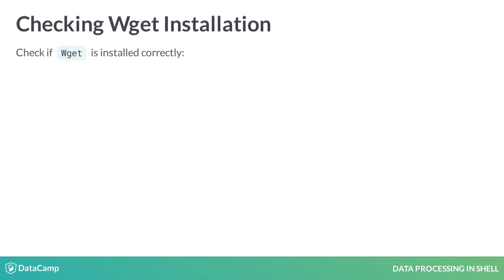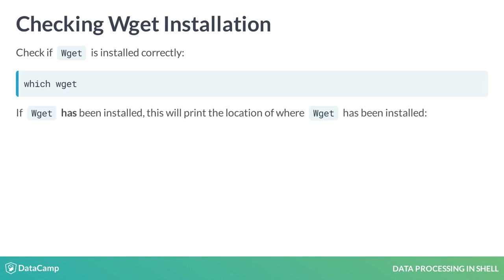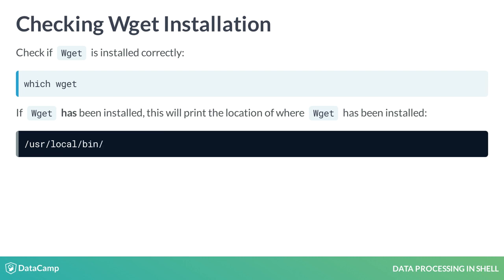Aside from using man, another way to check if wget has been installed correctly is by using which wget. This will return the location of where wget is installed — for example, in the local user bin. If wget has not been installed, there will simply be no output.